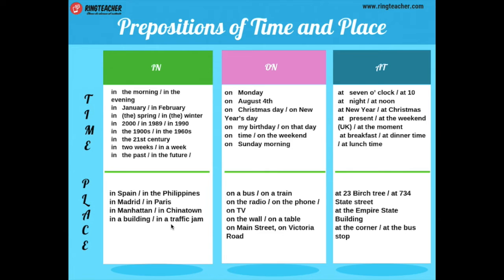¿Cuál es la diferencia entre 'in' y 'on' en términos de lugar? Con 'in' estamos en la ciudad, pero con 'on' estamos dentro de un bus, dentro de un tren, siendo escuchados en la radio, o en el teléfono. On a bus, on a train, on a radio, on the phone, on TV, on the wall, on the table. También: on Main Street, on Victoria's Road.